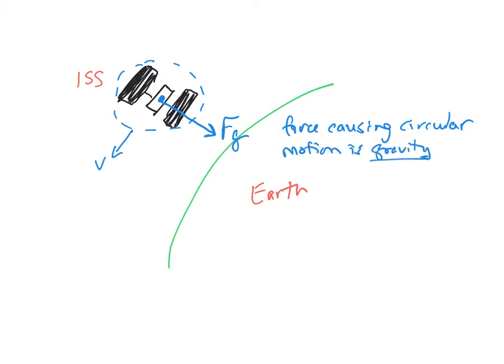We've seen three other forces cause things to move in a circle: tension, friction — as you see with cars and when you're running around a circular track — and the normal force, as we've seen with roller coasters and banked roads. Gravity is the fourth of those common forces that cause circular motion.